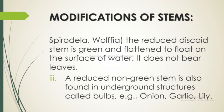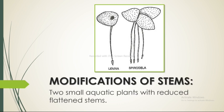A reduced non-green stem is also found in underground structures called bulbs, for example onion, garlic, and lily. These are two small aquatic plants with reduced flattened stems: Lemna and Spirodella, as shown in the figure.